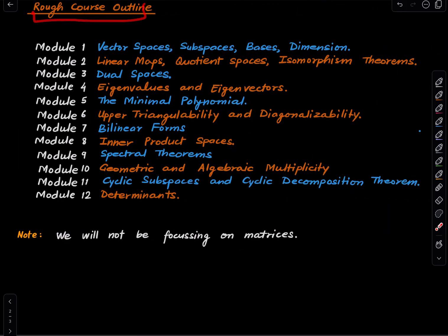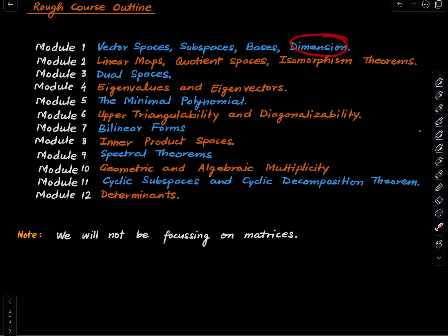Here is the rough course outline — I say rough because I may add more videos later. First, we'll discuss some basics of vector spaces. Things become very interesting when we discuss the notion of dimension. Then we'll do linear maps, dual spaces, eigenvalues, and eigenvectors. Then we'll move to structure theory.